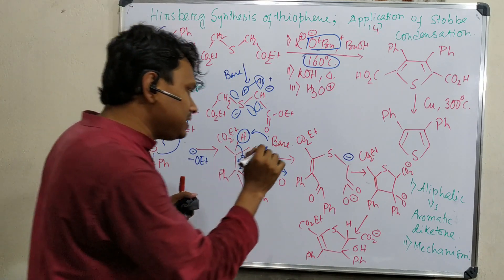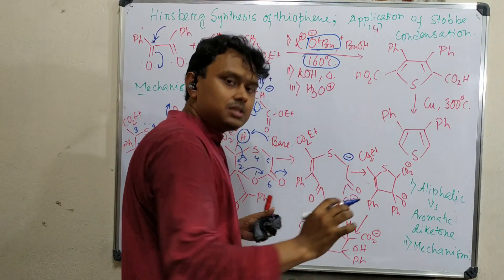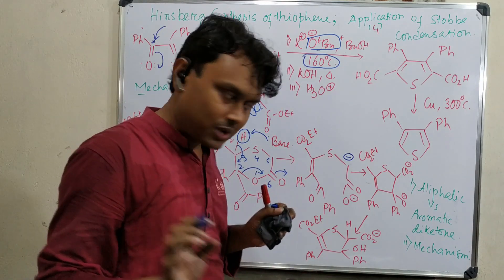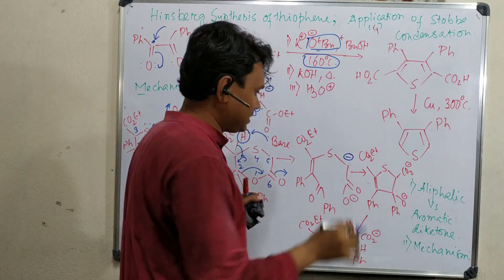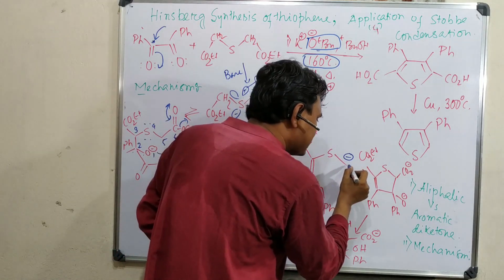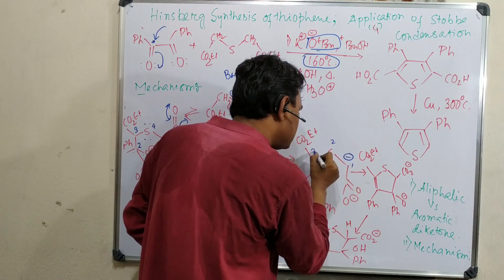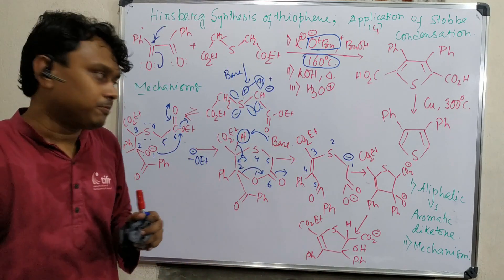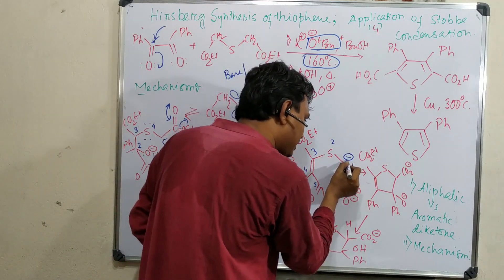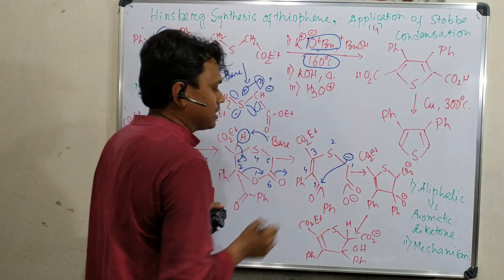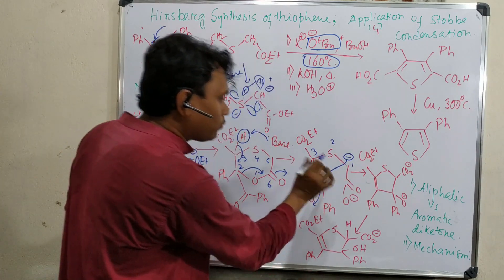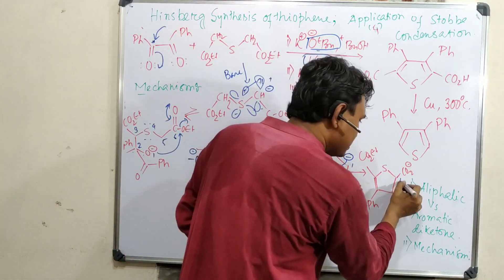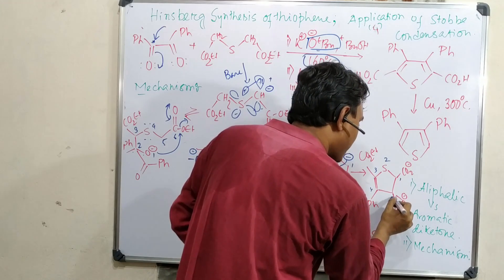There is one carbanion. This carbanion is also resonance stabilized with the carbonyl. I know the stability is relatively less compared to the ester one, but there is some resonance stability. Now let's count the number: 1, 2, 3, 4, 5. So now the carbonyl group is in position 5. So we can think that it can attack here. If it attacks, the ester group opens.